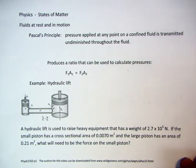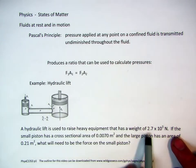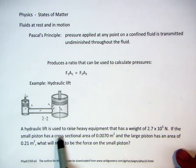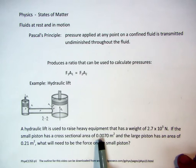A hydraulic lift is used to raise heavy equipment that has a weight of 2.7 times 10 to the third newtons. If the small piston has a cross sectional area of 0.007 meters squared and the large piston has an area of 0.21 meters squared, what will need to be the force on the smaller piston?